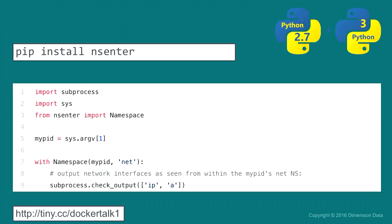The first package I came across was for namespaces — there's a package called NSEnter. NSEnter allows you to run a subprocess within a namespace. If you've got a network namespace running on localhost — which happens when you're running a Docker container — you can get the process ID of that Docker container, and within Python you can actually call processes inside the Docker container from outside it. So if you want to do debugging, or jump into a container, this is a nice clean way of doing it from Python instead of trying to SSH in.